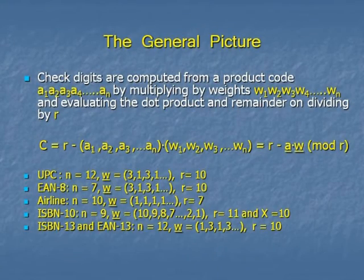So the universal product code, you had 12 numbers. The weights were 3-1, 3-1, 3-1. So you did nothing to the even numbers, but you multiplied the odds by 3. And the final answer had to be divisible by 10.